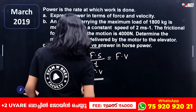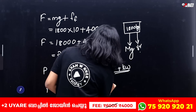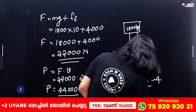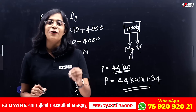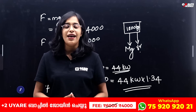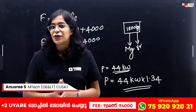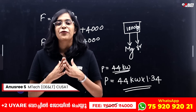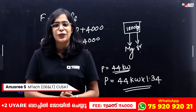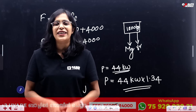To express the answer in horsepower: 4.4 kilowatt × 1.34 gives the equivalent in horsepower. All these questions are related to the concepts of work, energy, and power, which are connected to our daily life. If you miss any derivations or question types, you can revisit them. Work energy power is related to your daily life. All the best — see you soon!